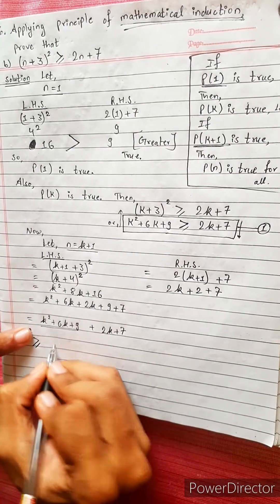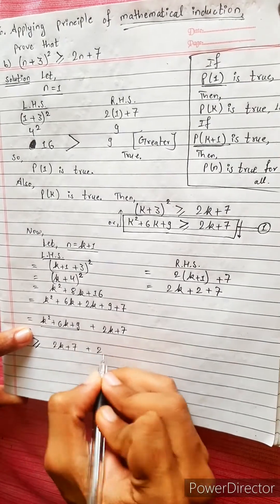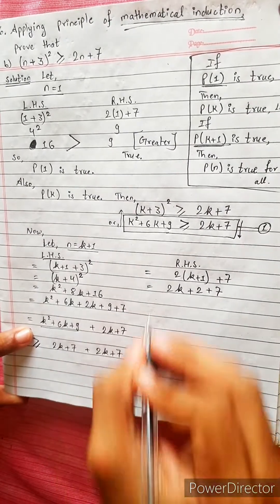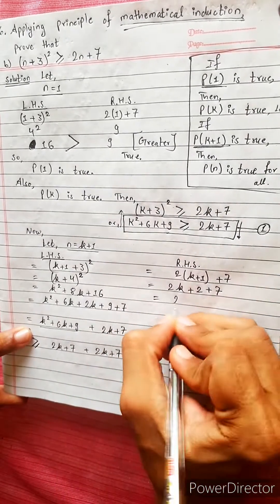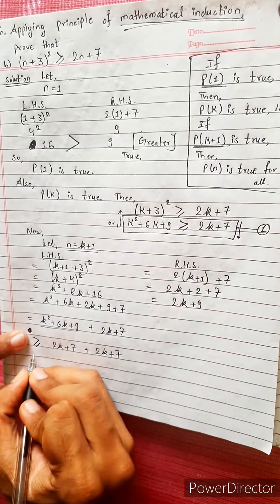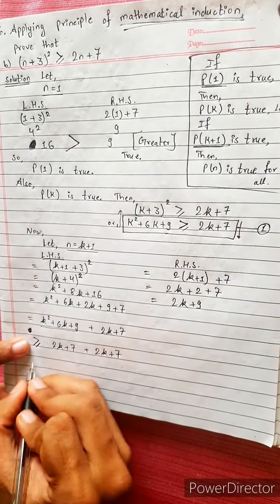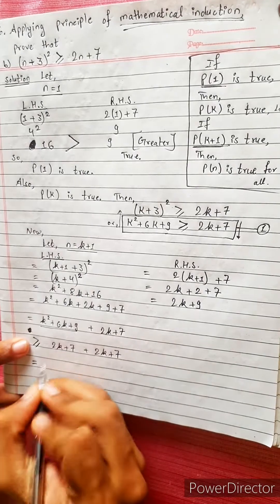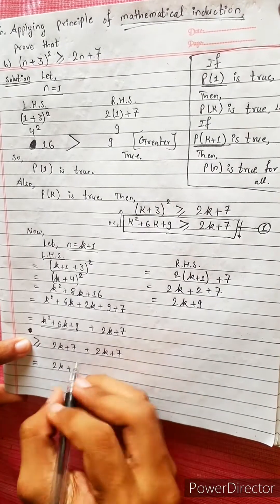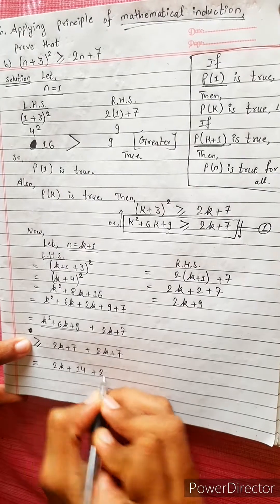The expression equals 2k plus 7 plus 2k plus 7 plus 9. The statement is equal to 9. Then 2k plus 7 plus 7 is 14, giving 14 plus 2k.